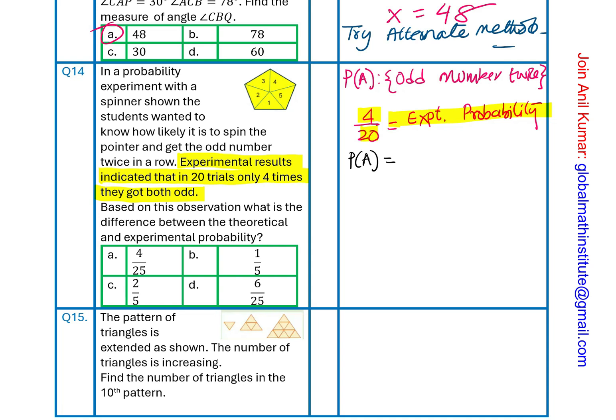In this particular case, how many odd numbers are there? Well, 1 is an odd number, 3 is an odd number, and 5 is an odd number. So, 3 out of 5 are odd numbers. So, when you spin once, getting an odd number will be 3 out of 5. Now, you want in a row twice, you want it again. So, that means it should be multiplied again by 3 by 5, and you get 9 over 25. Make sense? That is what you get.